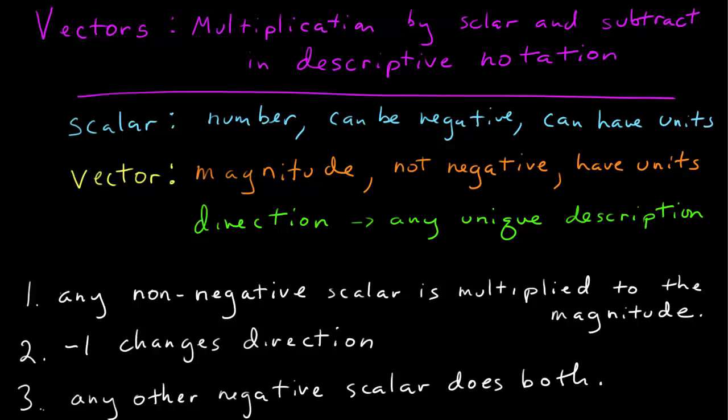I want to do multiplication by a scalar and subtraction of vectors using descriptive notation. A reminder, a scalar can be any number. They can be negative and they can have units. A vector is something that has a magnitude and a direction. The magnitude has the units, the direction does not. But a magnitude cannot ever be negative. A magnitude of a vector is always a positive number.